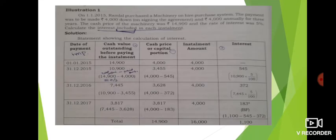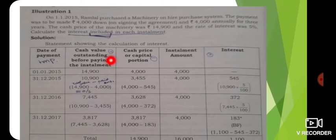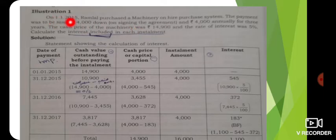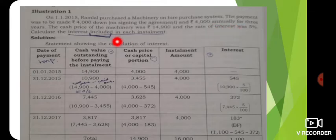Let's start with the question. I'm going to show you the screenshot from Dr. Jayansar's textbook. On 1-1-2015, Ramlal purchased a machinery on the Hire Purchase system. The payment was to be made as 4,000 down on signing the agreement, and 4,000 annually for 3 years. The rate of interest and cash price of the machinery are given.